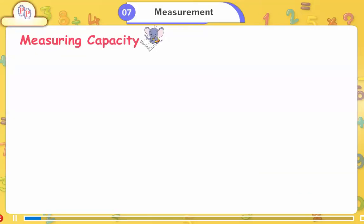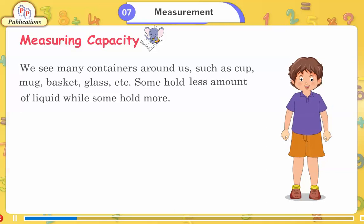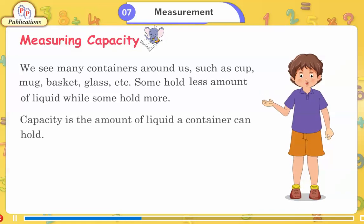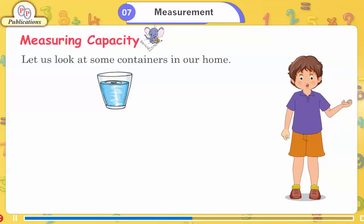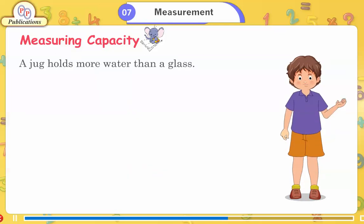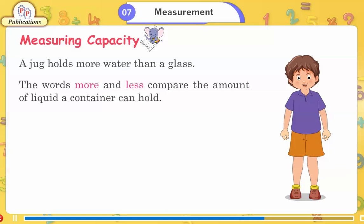Measuring Capacity. We see many containers around us, such as cup, mug, basket, glass, etc. Some hold less amount of liquid, while some hold more. Capacity is the amount of liquid a container can hold. A glass holds less water than a jug. A jug holds more water than a glass. The words more and less compare the amount of liquid a container can hold.